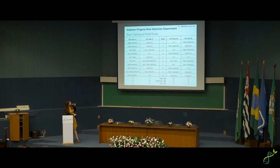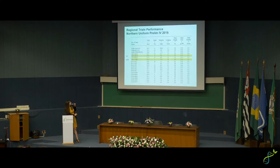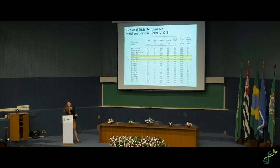Tracking through to preliminary yield trials last year, I had two very top-ranking lines in the maturity group fours in a regional test involving multiple public breeders in the north central region. One line was picked with canopy coverage and one was picked with yield — showing the yield data weren't bad and canopy coverage was equivalent. We'll see what these trends look like moving forward.